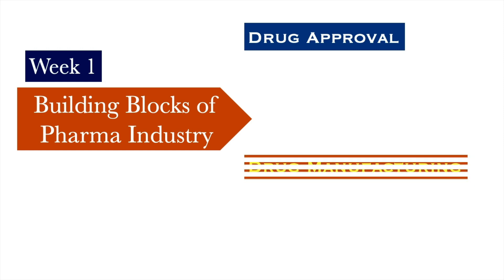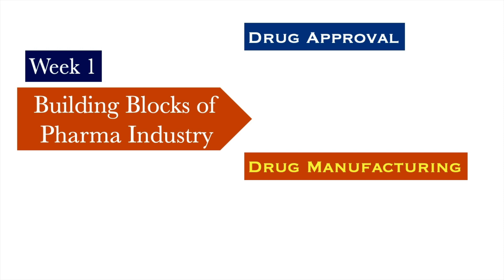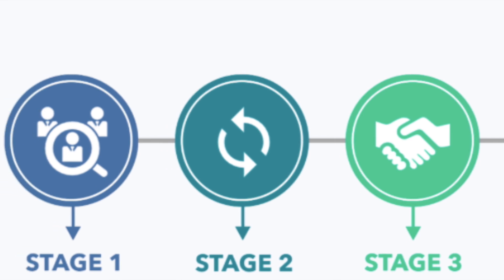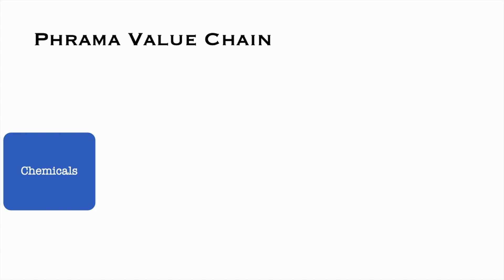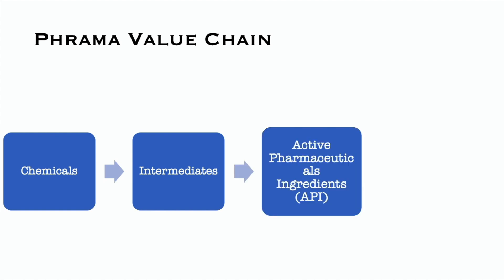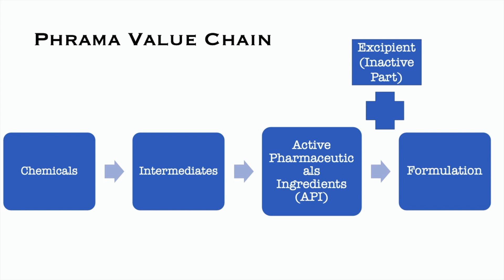Now let's move to the second part of the video: the drug manufacturing process. When a drug comes into your hands, it goes through several stages. First, there are basic chemical ingredients called starting materials. These are then combined into more advanced objects called intermediates. The intermediates in different combinations form the Active Pharmaceutical Ingredient, or API — the most important, most active part of the drug. This API is then combined with an inert portion called an excipient. The active plus inactive portion together form the formulation, also known as FDF — Finished Dosage Forms.